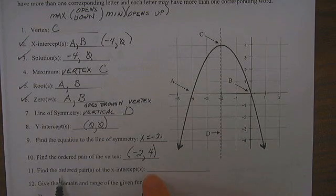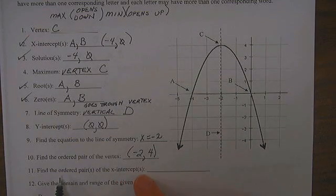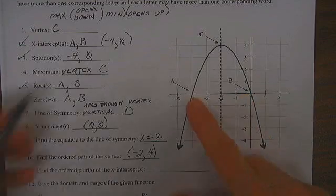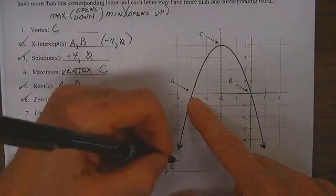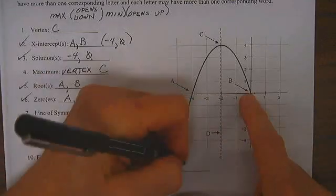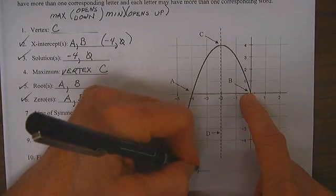The ordered pairs of the x-intercept are negative 4, 0 and 0, 0.